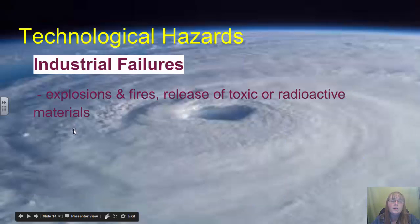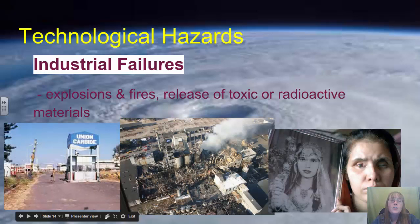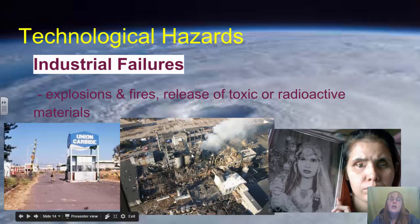We also have industrial failures such as fires, explosions, and release of toxic or radioactive materials. These three pictures are from the Bhopal disaster that occurred in India in the 1980s, when a chemical plant had an accidental explosion which released a large amount of poisonous toxic gas, killing as well as blinding several residents within the city of Bhopal.